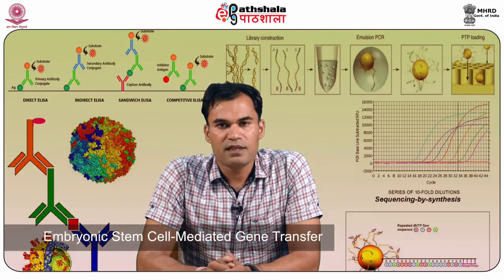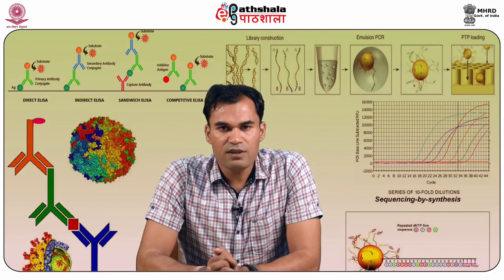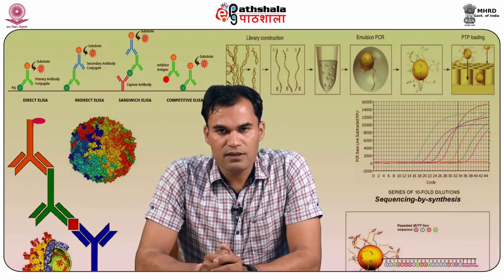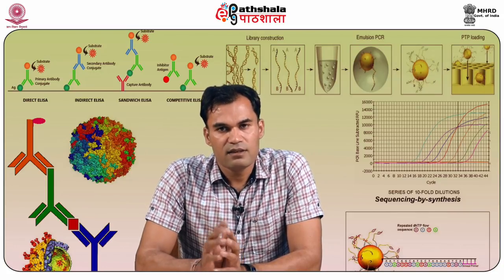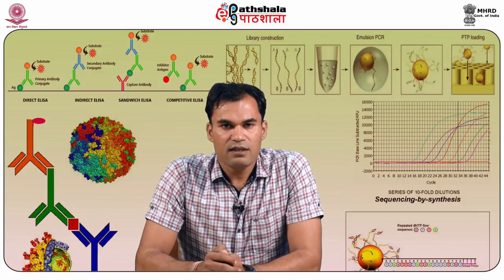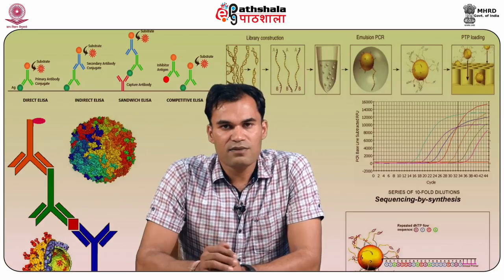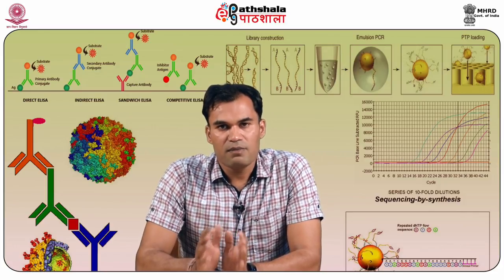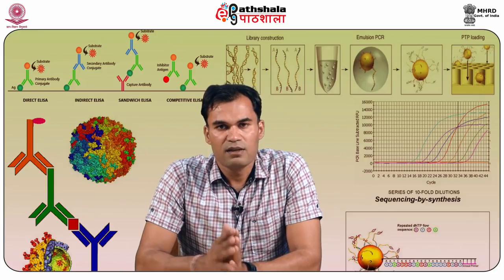The next method is embryonic stem cell mediated transfer. First, isolate the blastocyst from a mouse. Blastocyst is basically the 16-cell stage. We are interested in the inner cell mass of the blastocyst because it has pluripotent properties. After culturing the inner cell mass, we employ gene targeting for insertion of our transgene into the embryonic stem cells. After injection of genetically modified embryonic stem cells into the cavity of a blastocyst from a different mouse strain, re-implantation into the foster mother leads to the production of transgenic animal progeny.